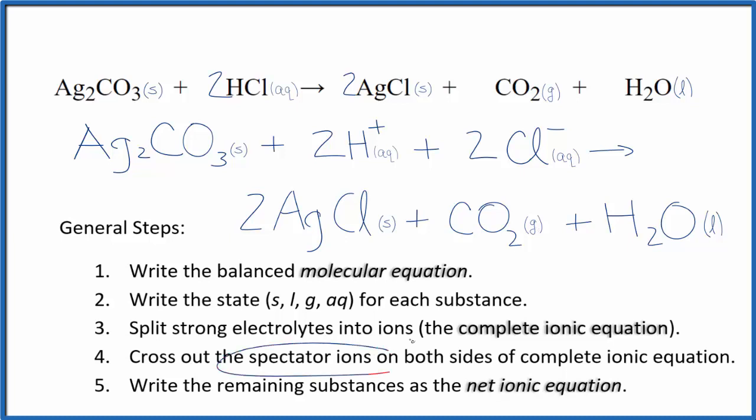Now we would cross out spectator ions, except there aren't any. Everything in the reactants and the products is unique, so there's no spectator ions. There's nothing the same on both sides. So this is both the complete and the net ionic equation for silver carbonate plus hydrochloric acid.